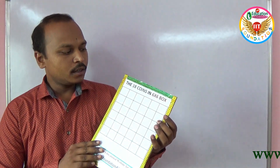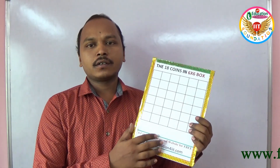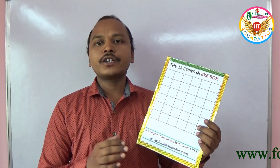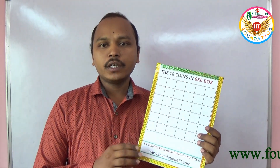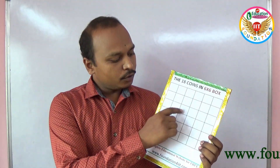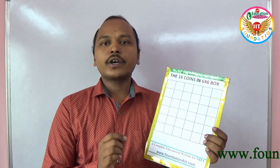Welcome to the education channel. In this video I'll explain a simple math project related to rows and columns. You can see one project here: 18 coins in a 6x6 box. We need to keep 18 coins in 6 rows and 6 columns. The condition is every row and every column should have only 3 coins — 6 times 3 is 18.